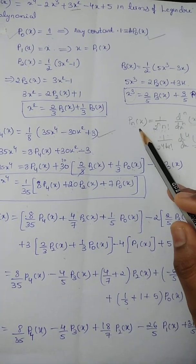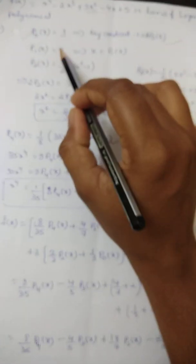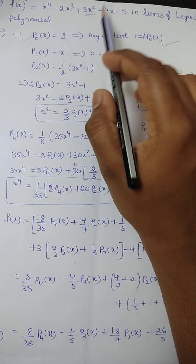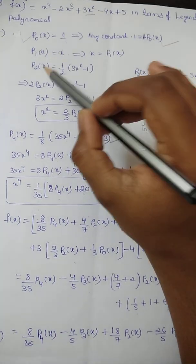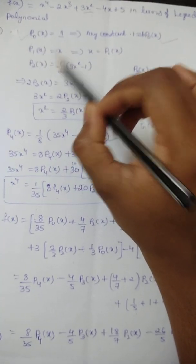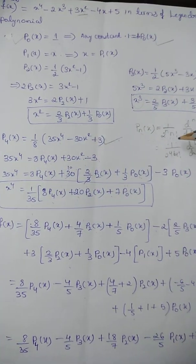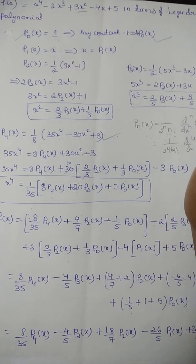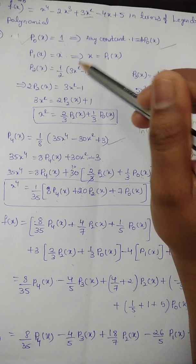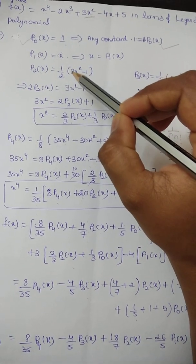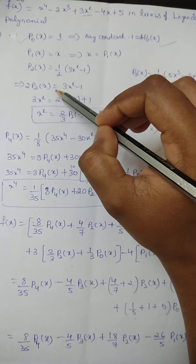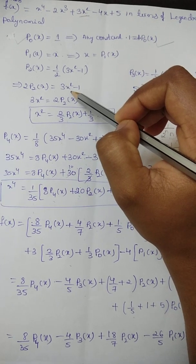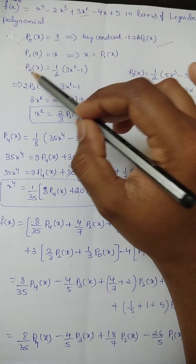Next, P₁(x) = x. When you put n = 1, we get the answer equal to x, which implies x = P₁(x). So in place of x we can write P₁(x). Now for P₂(x): when you put n = 2, we get P₂(x) = (1/2)(3x² - 1). Rearranging, 2P₂(x) = 3x² - 1.